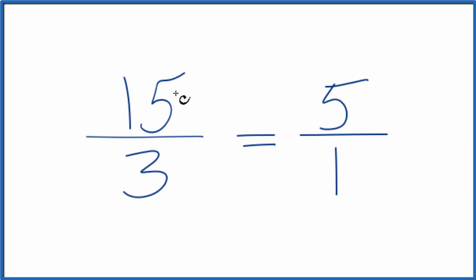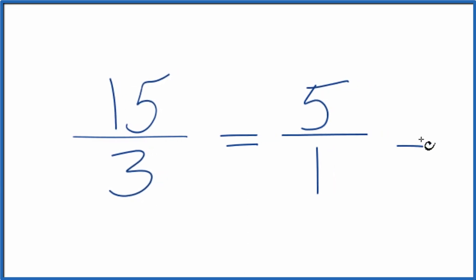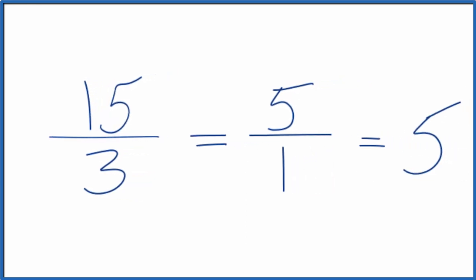So the fraction 15 thirds, we can reduce or simplify that to 5 over 1. And 5 over 1, that's just 5. So we could just have the whole number 5.